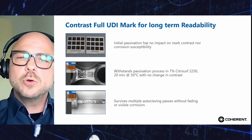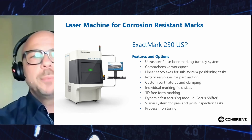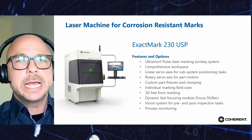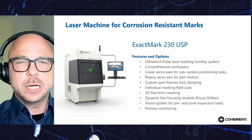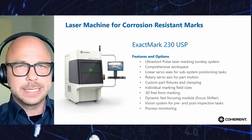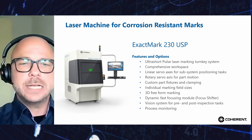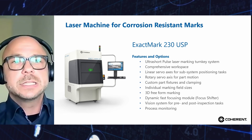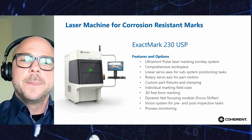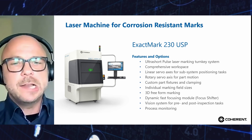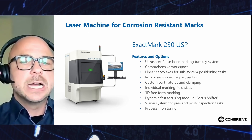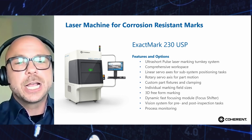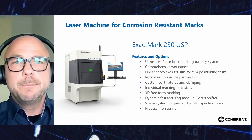Our complete solution featuring all these capabilities is the exact mark 230 USB. It is a turnkey standalone system with an ultra-short pulse laser marking system integrated. It has a comprehensive workspace for single parts or pallets, linear axes for subsystem or part motion, part fixturing and clamping, individual marking field sizes, 3D freeform marking capability, and is equipped with vision systems for pre- and post-inspection.